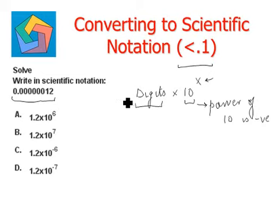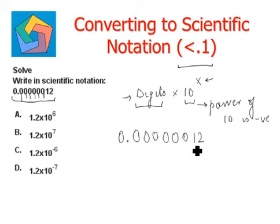Let's see how we write the digits and the power of 10. Let's write the given number first: 0.00000012. So first, for the digits, we consider this number without the zero, that is 12.